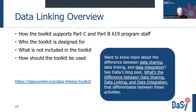Part C and Part B 619 program staff use their data to address important questions about program quality and results for children and their families. Often they realize they need additional data from other partners and agencies to answer more complex questions. This is where the DAISY data linking toolkit comes in handy. The overview section describes how the toolkit supports Part C and Part B 619 program staff, what the toolkit is designed for, what is not included, and how it should be used. There is also a blog about the difference between data sharing, data linking, and data integration.